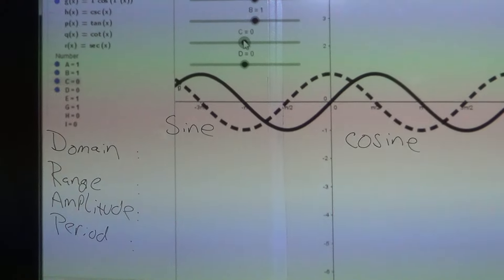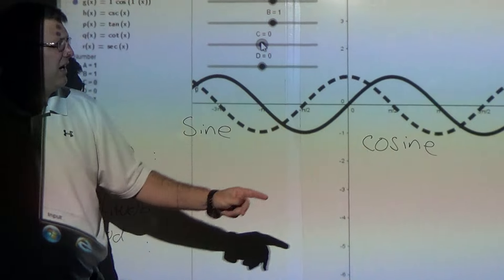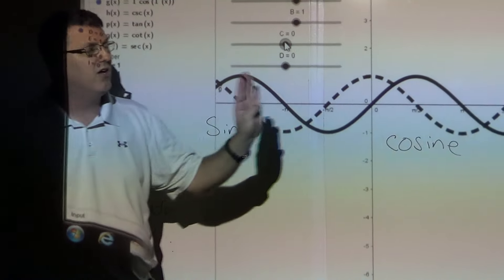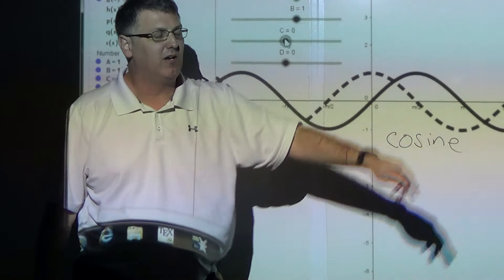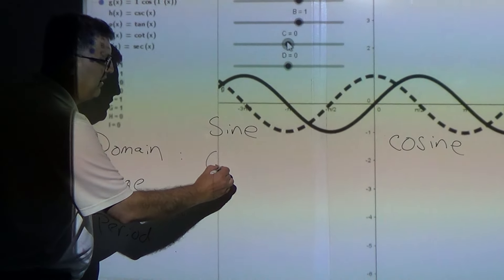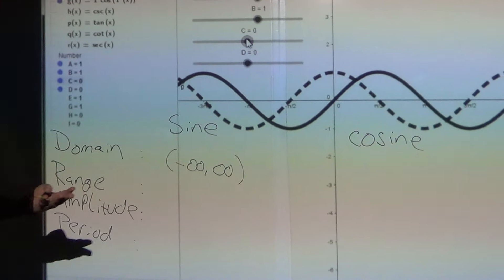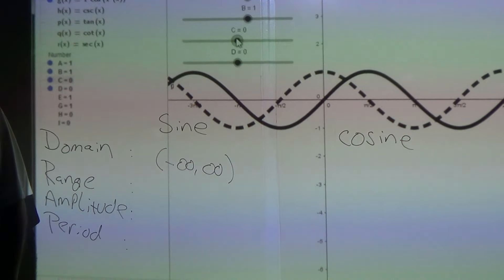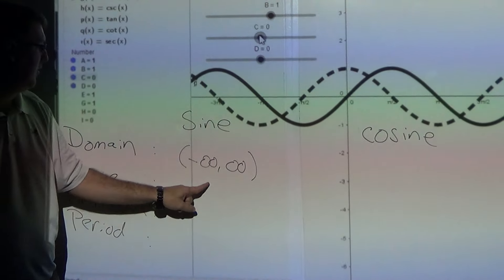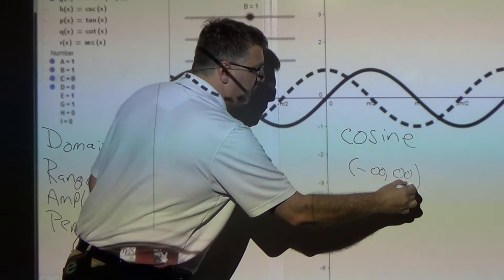So right off the bat with sine wave, domain. Domain is the x, how far it goes out left to right. Well, the domain here, even though it stops here on the screen, it just keeps going all the way out to negative infinity and all the way out to infinity. So for the domain for sine, it's going to be negative infinity to infinity because it never stops. It starts way over negative infinity and it never ends.